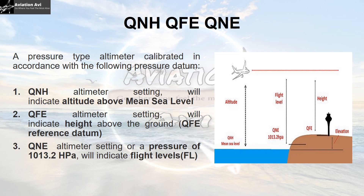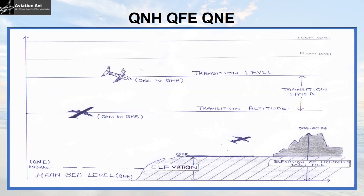Whenever the vertical positioning of the aircraft is mentioned with respect to QNE, it is the flight level we are talking about. The elevation of any point on the ground or obstacles is always mentioned with respect to mean sea level, so when the aircraft is close to the aerodrome environs, the pilot sets the local QNH — given by ATC during taxi clearance — so that the aircraft navigates safely above nearby obstacles. As the aircraft climbs and moves away from the aerodrome, the local QNH may differ from place to place, which can create ambiguity.